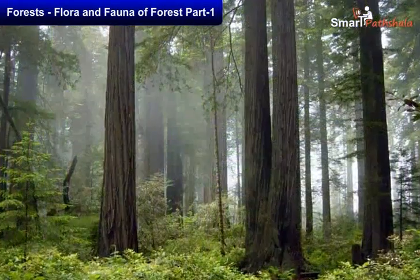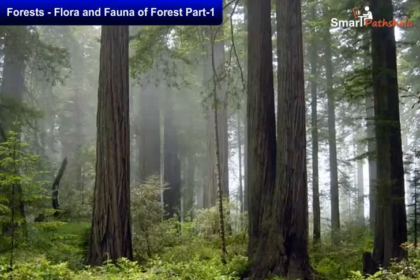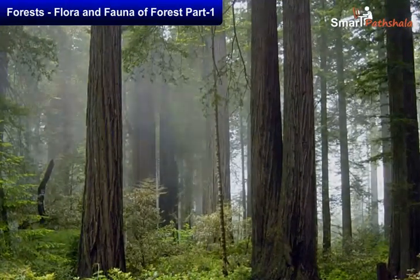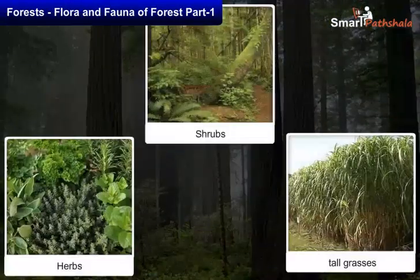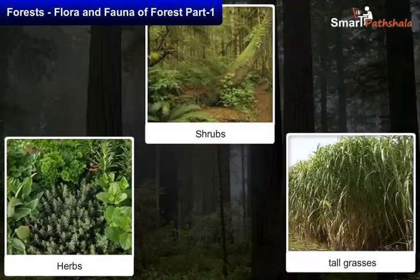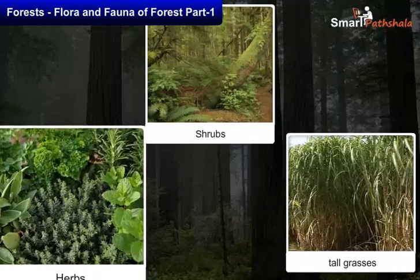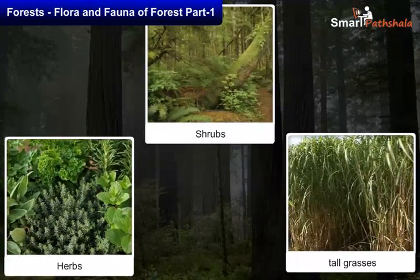Giant and tall trees constitute the top layer, followed by shrubs and tall grasses which grow in the central areas, and herbs form the lowest layer.